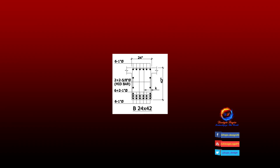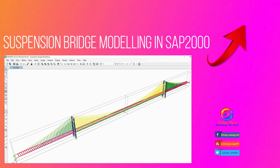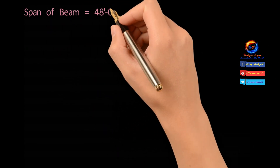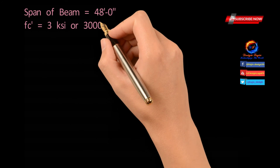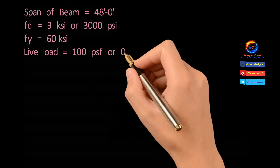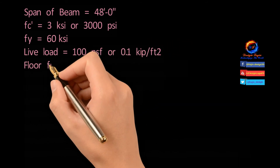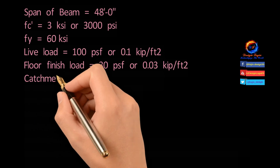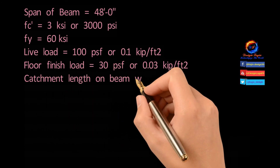This is reinforcement detailing of this 24 inch by 42 inch beam. Want to see how to model a suspension bridge in SAP2000? Click on the card link showing top right of video. Third beam deflection: this beam has more catchment length from the right side and slab thickness increases to 8 inch due to increase in slab span on right side. Same span, concrete strength, steel yield strength, live load, and floor finish load are used.